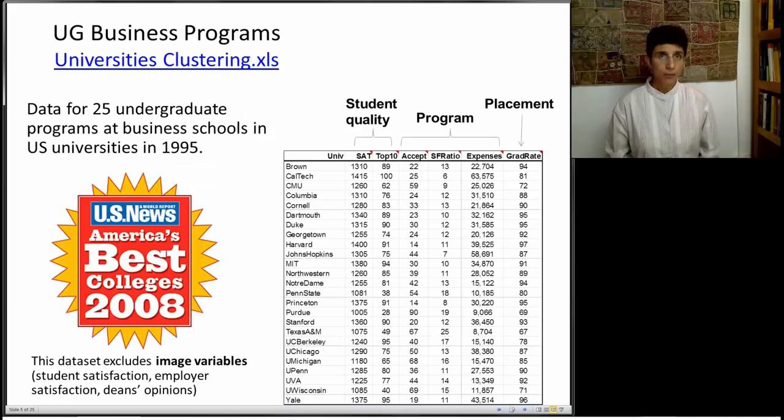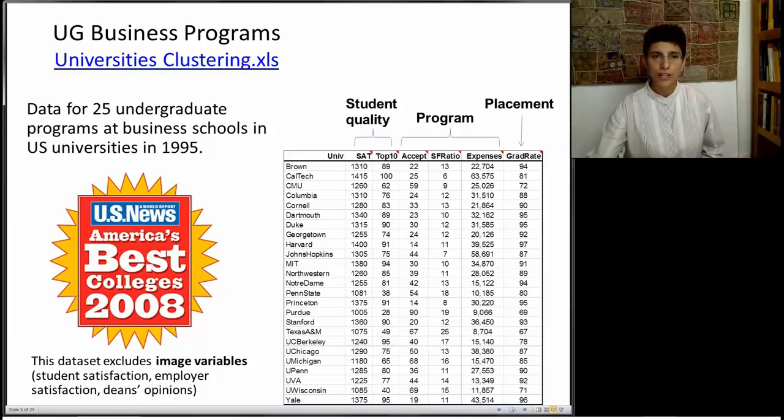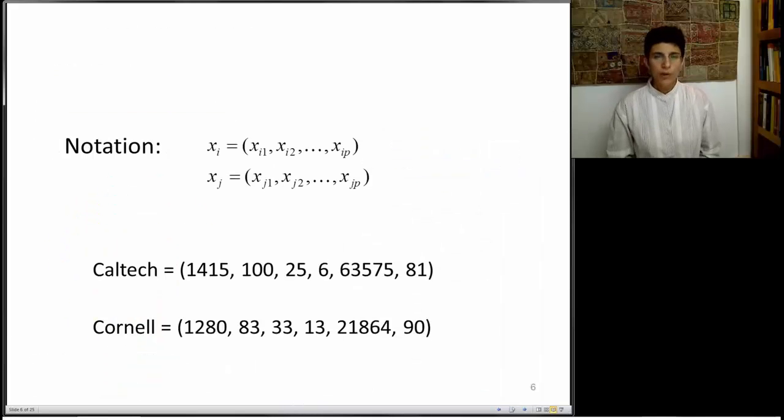Reminding you again, our example is going to look at universities in terms of rankings of business school programs. And we have a bunch of measurements for each university. We have two student quality measures, three program measures, and one placement measure, for a total of six measurements. Suppose that we want to measure the distance between two universities. I'm choosing Caltech and Cornell.